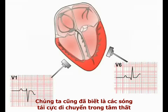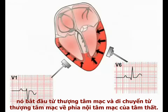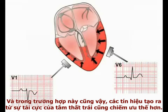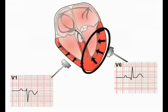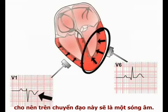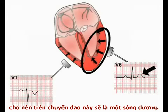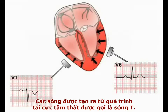Repolarization spreads through the ventricles in the opposite direction to the depolarization wave, beginning in the epicardium and spreading from the epicardial to the endocardial surface of the ventricles. The deflection produced on an ECG by ventricular repolarization is again dominated by the signal from the left ventricle. As this repolarizing current is moving towards V1, the deflection produced is negative in this lead. In contrast, this repolarizing signal is moving away from lead V6, producing a positive deflection. The deflection produced by ventricular repolarization is termed a T-wave.